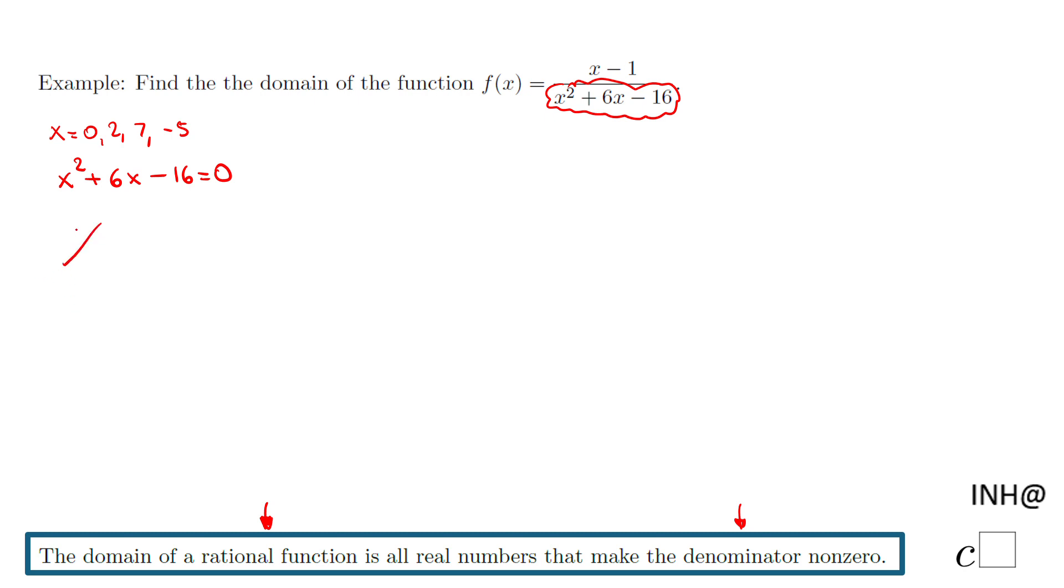I'm looking for two numbers whose product is -16 and whose sum is 6. What two numbers have a product of -16 and a sum of 6? Those are 8 and -2. If you need more help with factoring, you can find more examples on my channel. So we have (x + 8)(x - 2) = 0.